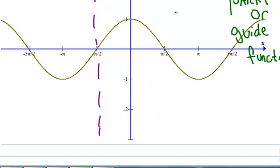And positive pi over 2, and basically it's undefined wherever the cosine is zero.